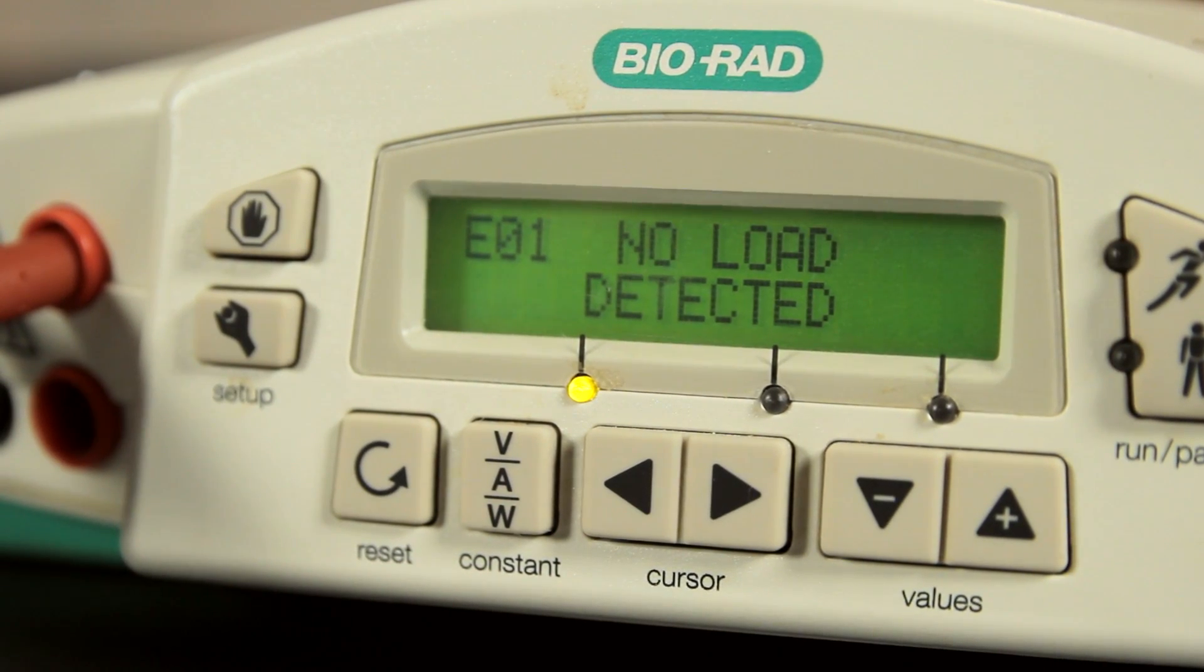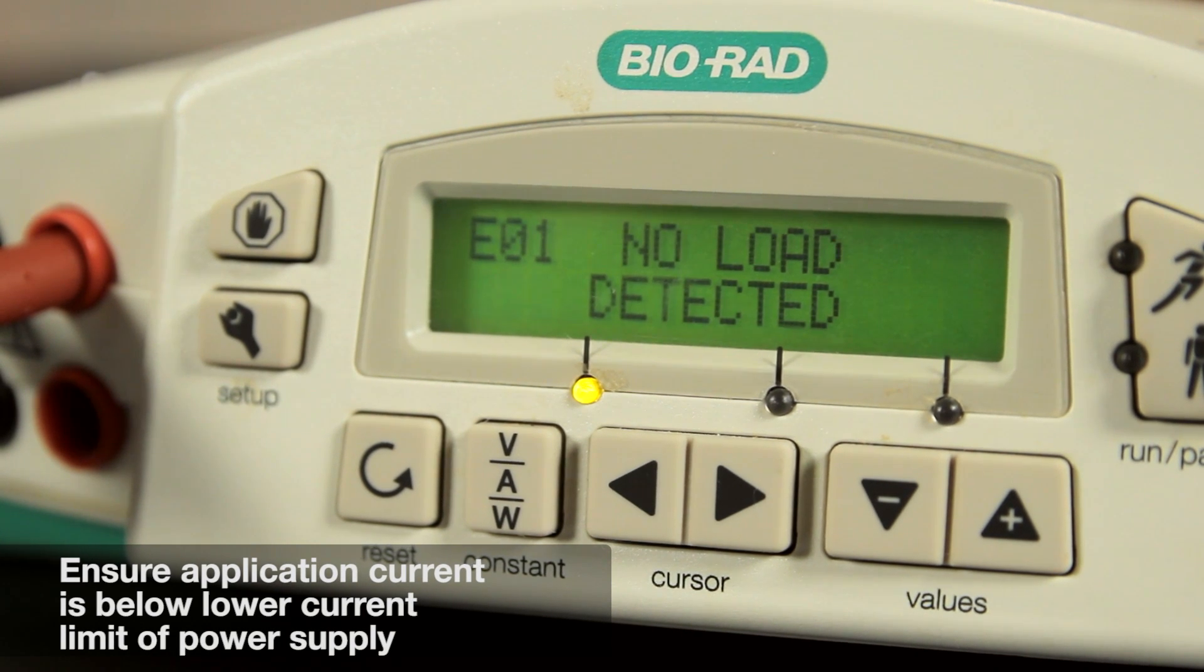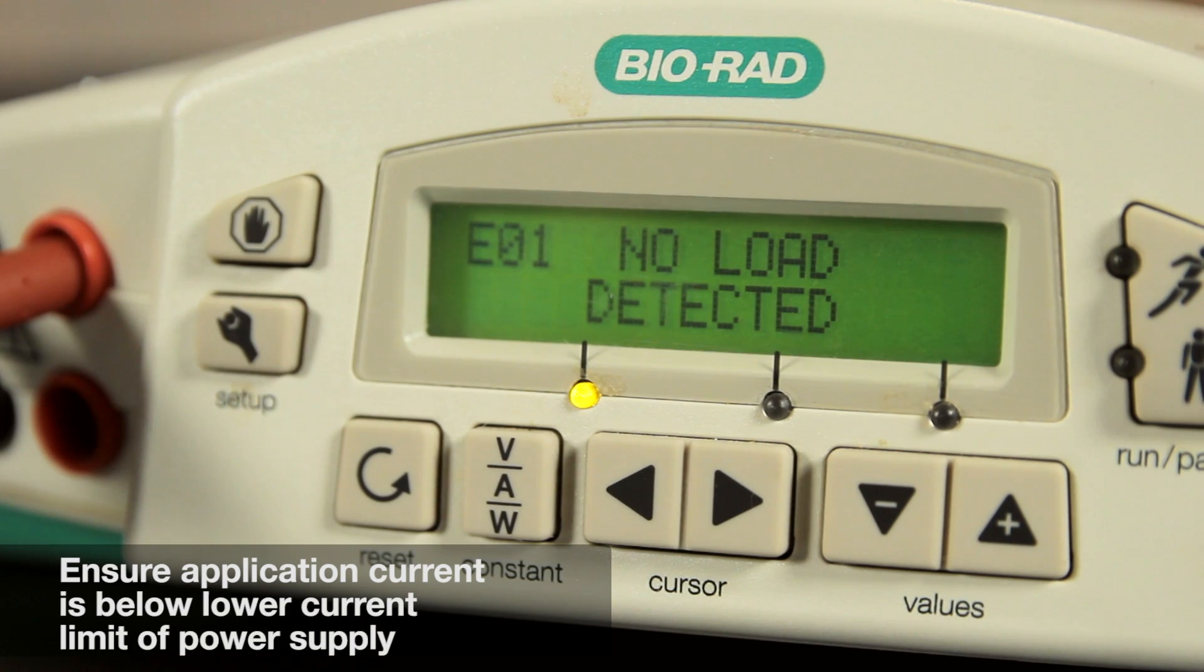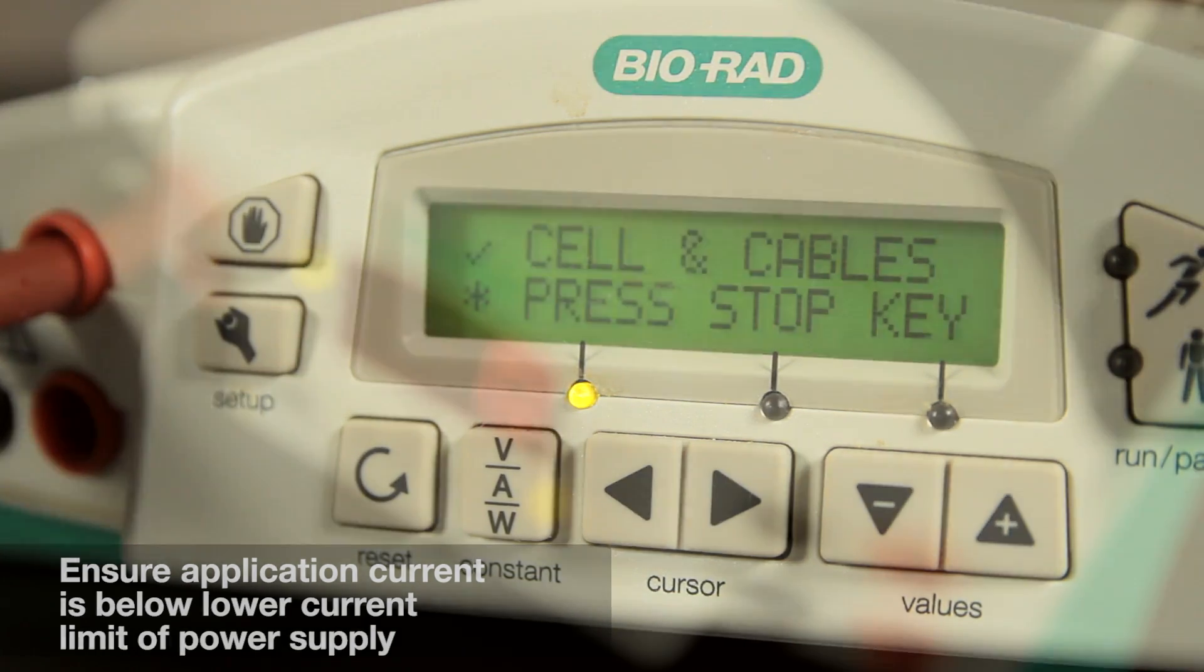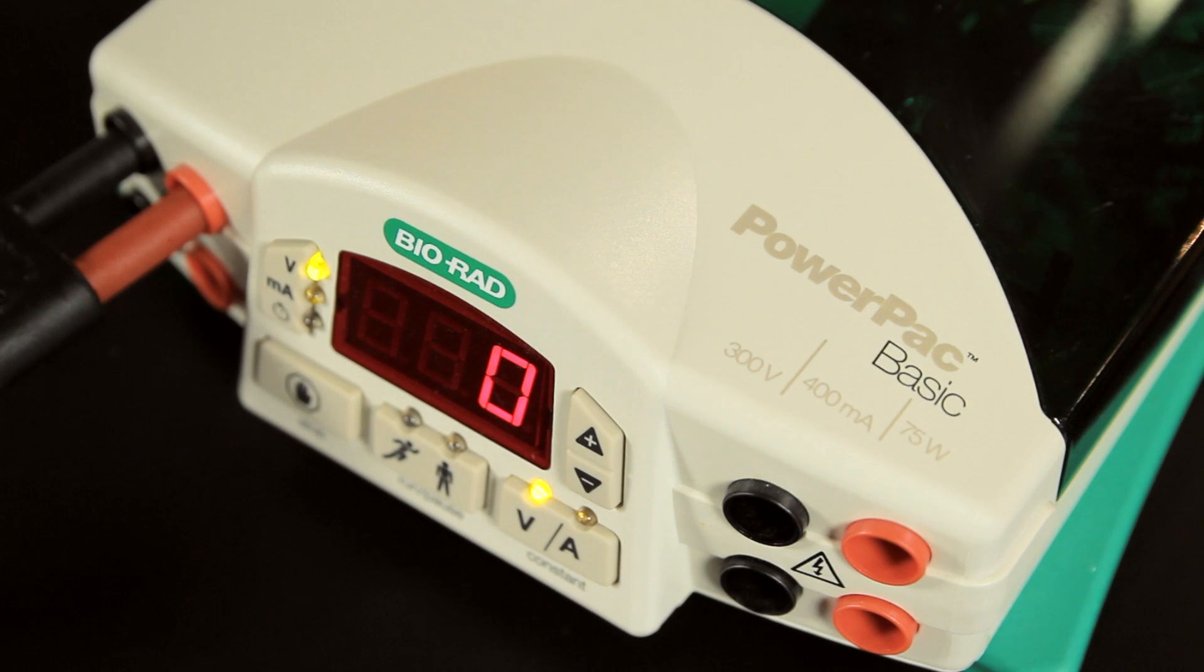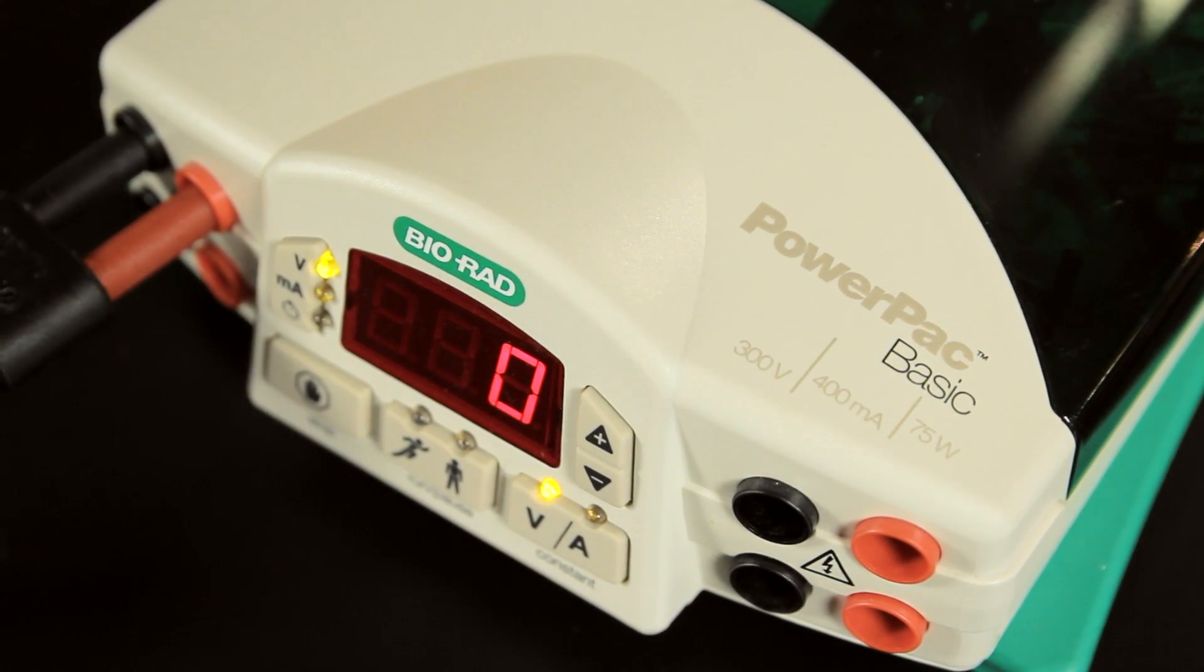An E1 error can also occur when the application current is below the lower current limit of the power supply. Some applications, for example an IEF ready gel, typically have very low current during the run. In this case, you want to use a power pack with a lower current limit, such as the power pack basic, or turn off the no load detection, if necessary.